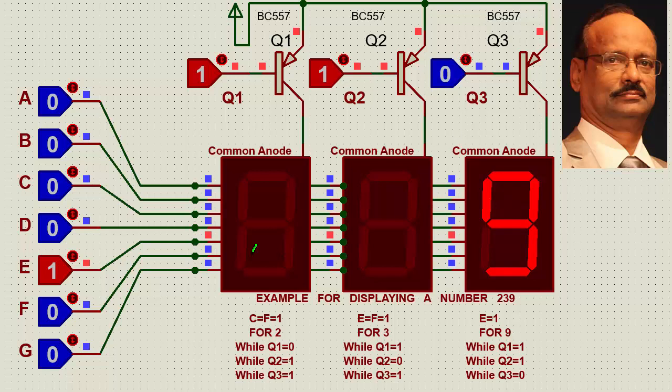Now the question comes how 2, 3, 9 will be displayed. What we do, these 3 pins, while data for 2 is coming here, we will switch on this. While data for 3 is coming, we will switch on this. While data for 9 is coming, we will switch on this. That means at a given time, only 1 display is on.